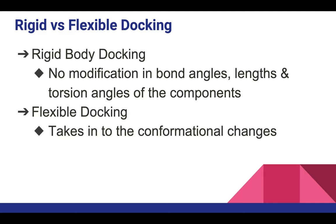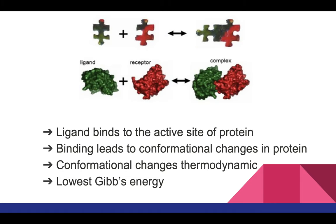Rigid docking means there is no modification in bond angles, length, or torsion angles of the components — you just put it there and proceed with the docking command. Flexible docking takes into account conformational changes; you tweak some parameters to make sure they can conform with one another. It's kind of like a jigsaw puzzle — you try to connect pieces and find the suitable site where they fit.